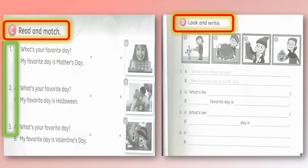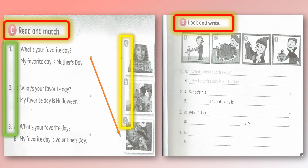For part C, read and match — there are three questions. The questions are the same: number one, what's your favourite day? Number two, what's your favourite day? Number three, what's your favourite day? The answers are: number one, my favourite day is Mother's Day. Number two, my favourite day is Halloween. Number three, my favourite day is Valentine's Day. You have to read and then match — draw a line from the question and answer to the correct picture, labelled A, B, or C. That is part C.